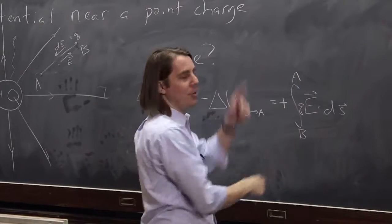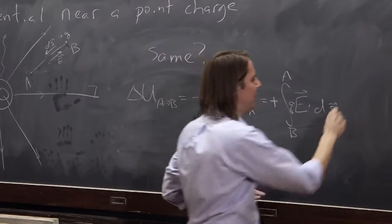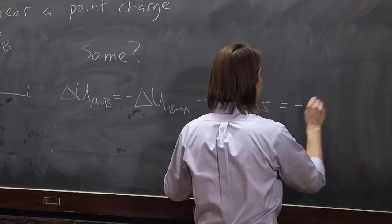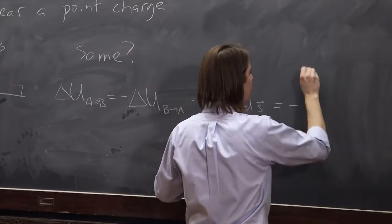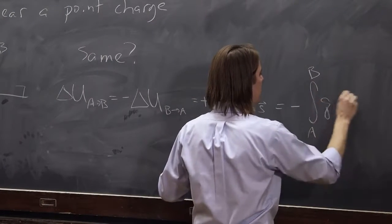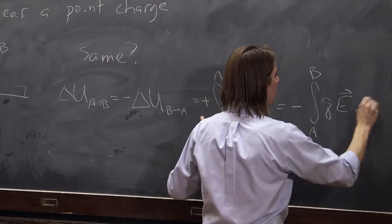Or another way to think of it is we're going to flip the limits. If you flip the limits, you've got to add another negative sign. That's equal to negative integral, if we go from a to b, of qe dot ds.